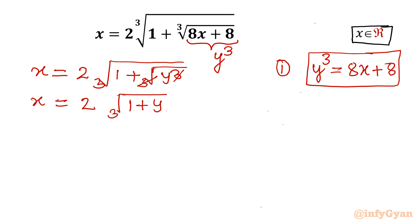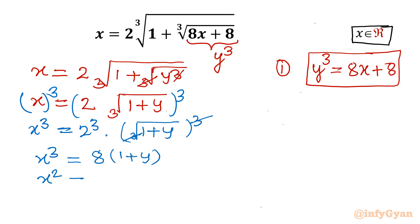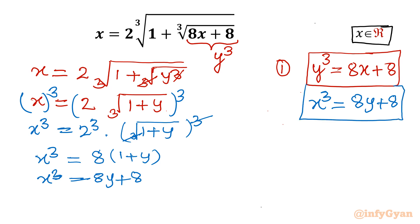Now I will cube both sides. The left-hand side becomes x³. The right-hand side is 2³ times the cube root of (1+y) whole cubed, and the power 3 and cube root cancel. So we get x³ = 8(1 + y), which gives x³ = 8y + 8. Notice this is symmetrical to equation 1 — only the variable has changed.